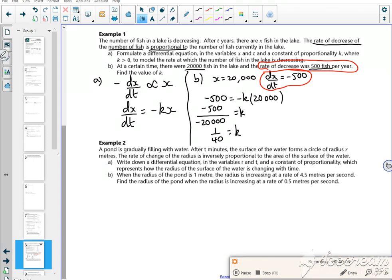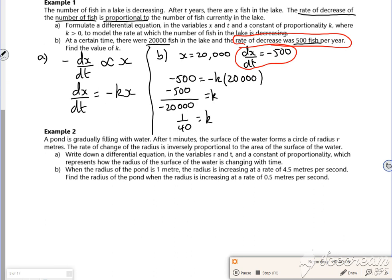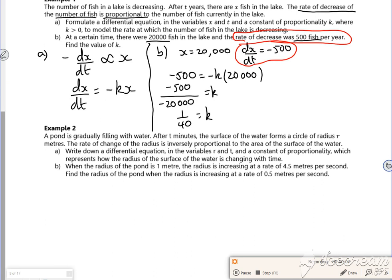Hi everyone, we'll have a look at this one. I've now got a pack that actually looks the same, so I'm not thinking that question's in the wrong place. So here we go, it says a pond is gradually filling with water. After two minutes the surface area forms a circle of radius R. We change colour so it stands out more.